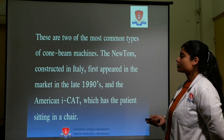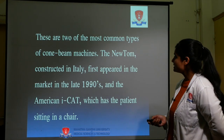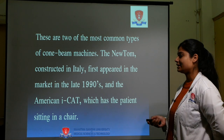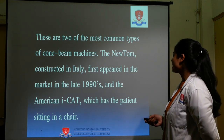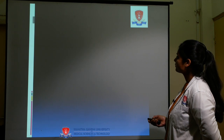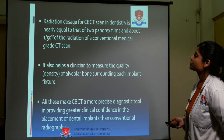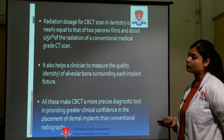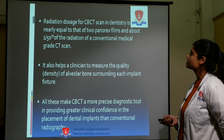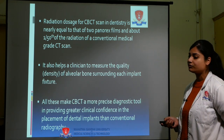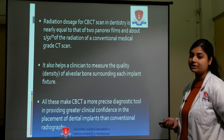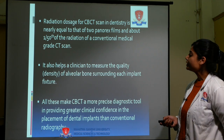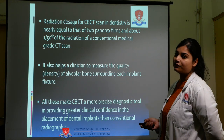These are two of the most common types of cone beam machines. The Newtom, constructed in Italy, first appeared in the market in the late 1990s, and the American iCat has the patient sitting in a chair. Radiation doses for a CBCT scan in dentistry are nearly equal to that of two Panorex films or OPG films, and about one-fiftieth of the radiation of a conventional medical grade CT scan. It also helps a clinician to measure the quality of alveolar bone surrounding each implant fixture.